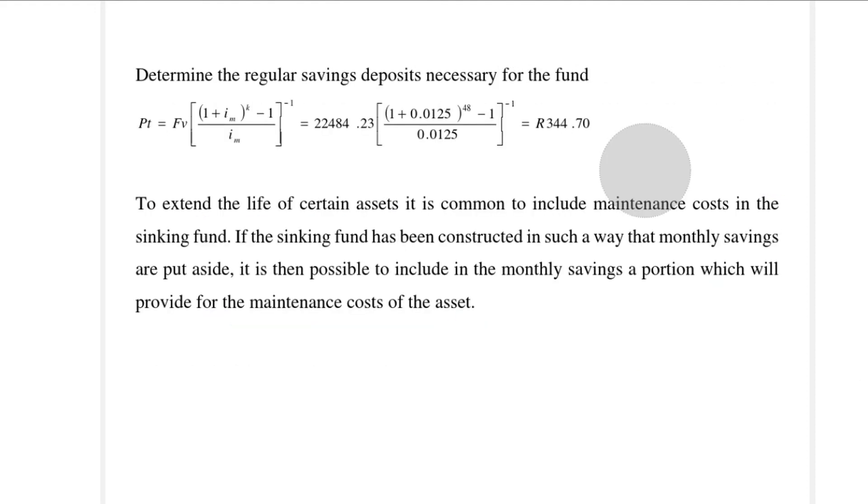In the next slide we will calculate the regular payments into our fund. This R22,484 is what I need to have accumulated in my fund. The deposits are made on a monthly basis, so that's why it's 48, which is 12 times 4, and I have a final answer of R344.70 that I need to deposit into this fund on a monthly basis.